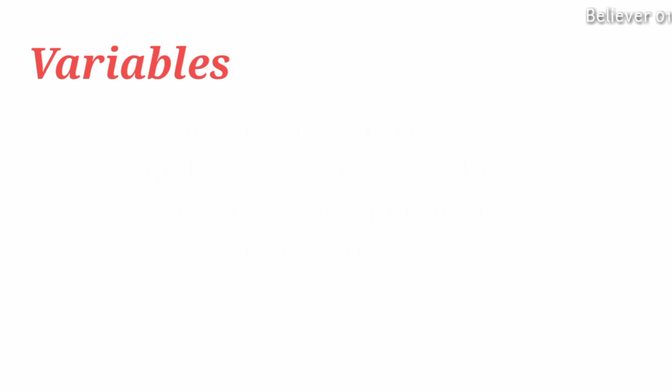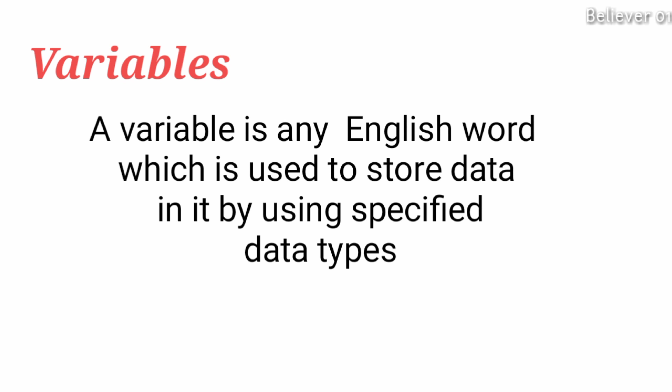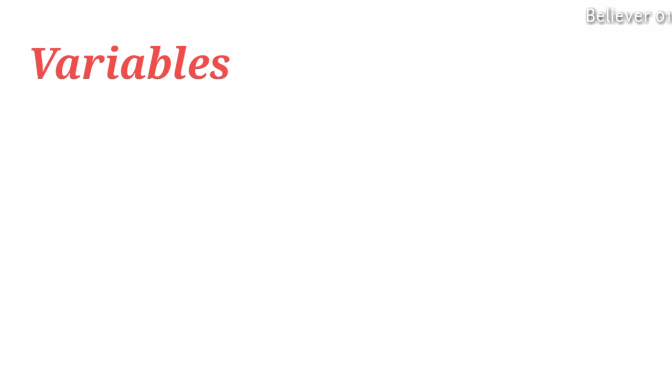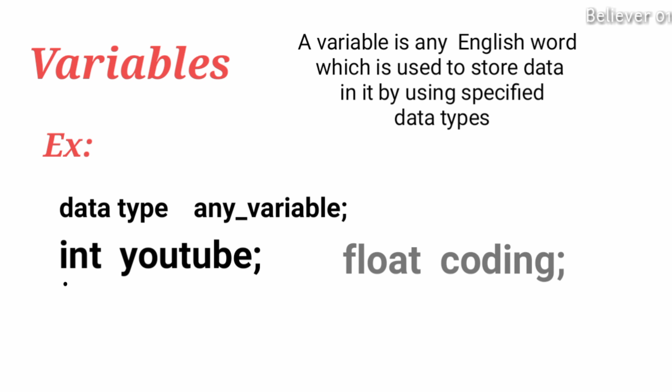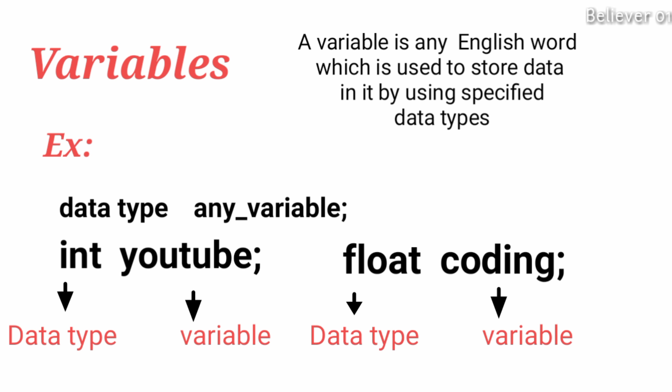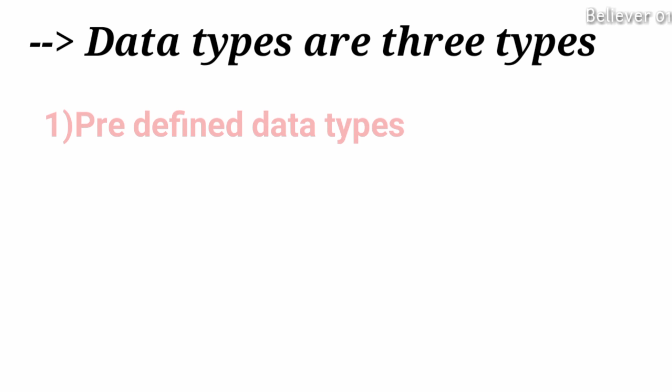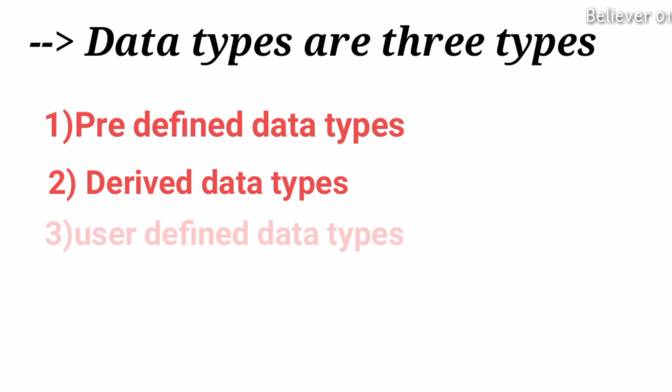Let us discuss about data types. Before learning data types, let me clarify what variables are. A variable is any English word used to store data. Data types decide the type of data that a variable should store. For example, 'int youtube' — here 'int' is called the data type and 'youtube' is called the variable. We have many types of data types: predefined data types, derived data types, and user-defined data types.